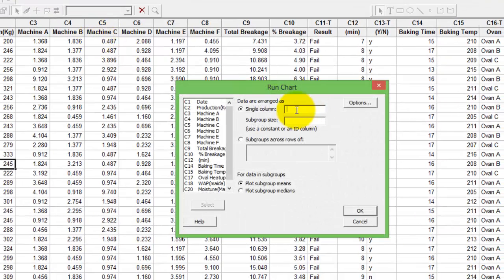Select the matrix that you want to do your run chart for. For example, I'm using C2 Production, my subgroup size being 1. Press OK.